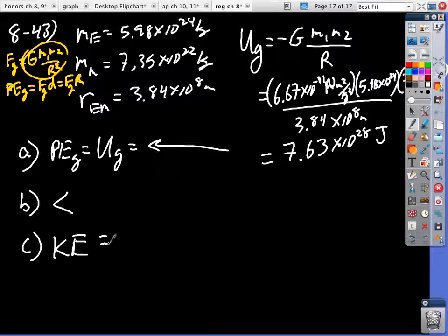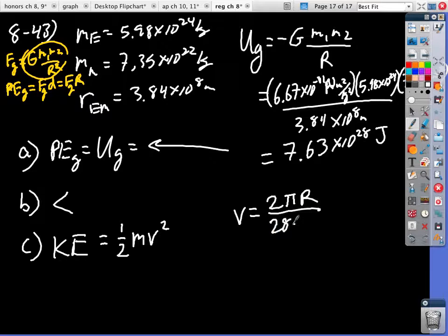Now the kinetic energy of the Moon is going to be 1/2 mv squared. How fast does the Moon rotate? It goes once every 28 days, I think. So the velocity of the Moon is 2 pi r in 28 days. But we have to convert all that junk to meters per second. So we're going to go with 2 pi times r, which is 3.84 times 10 to the 8th, divided by 28 times 24 times 3600.